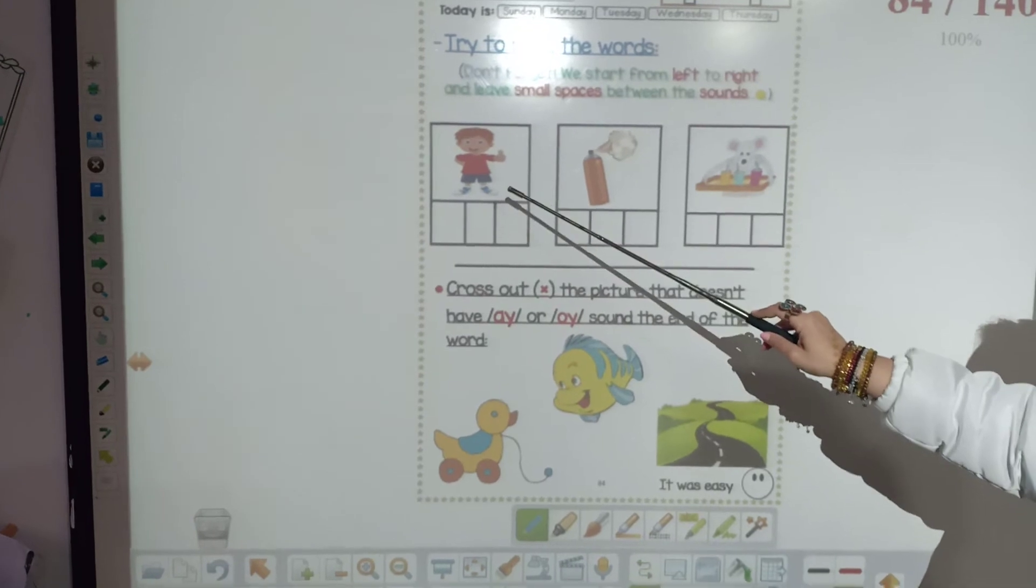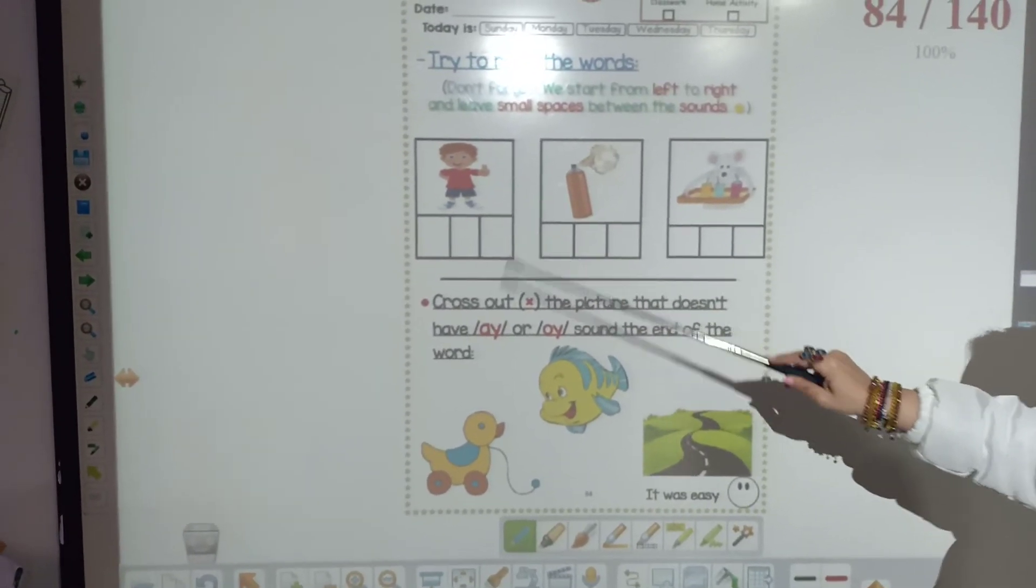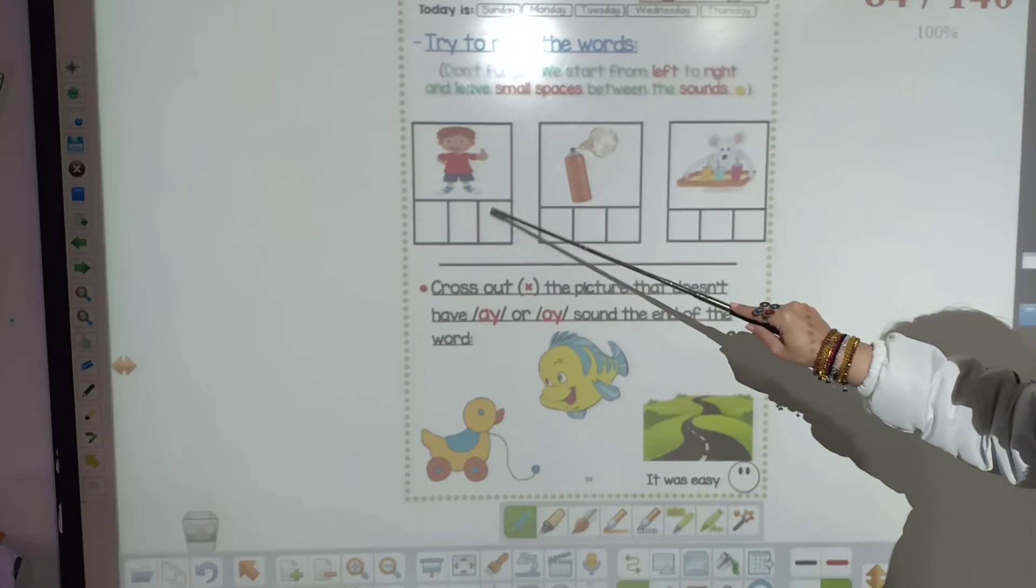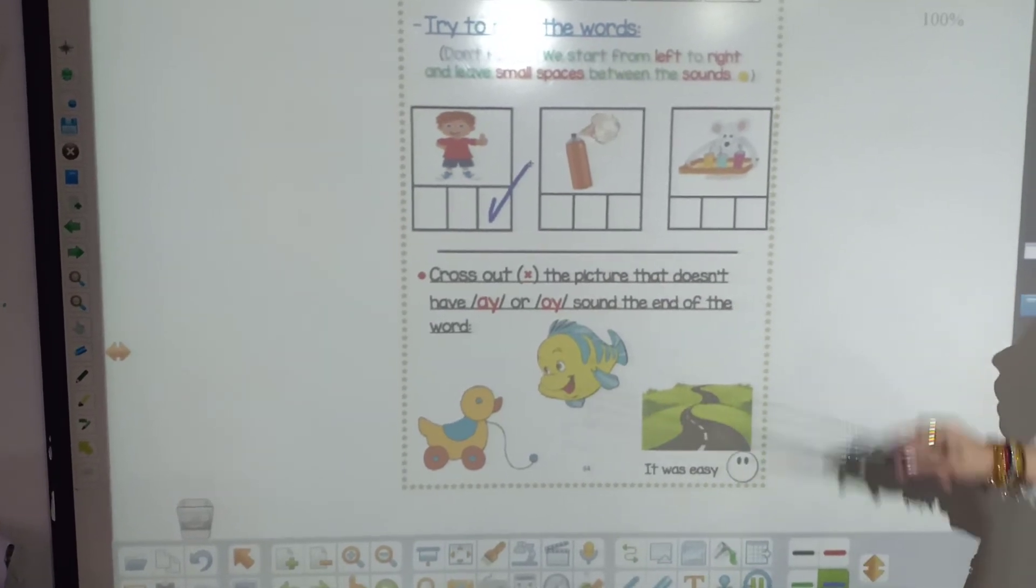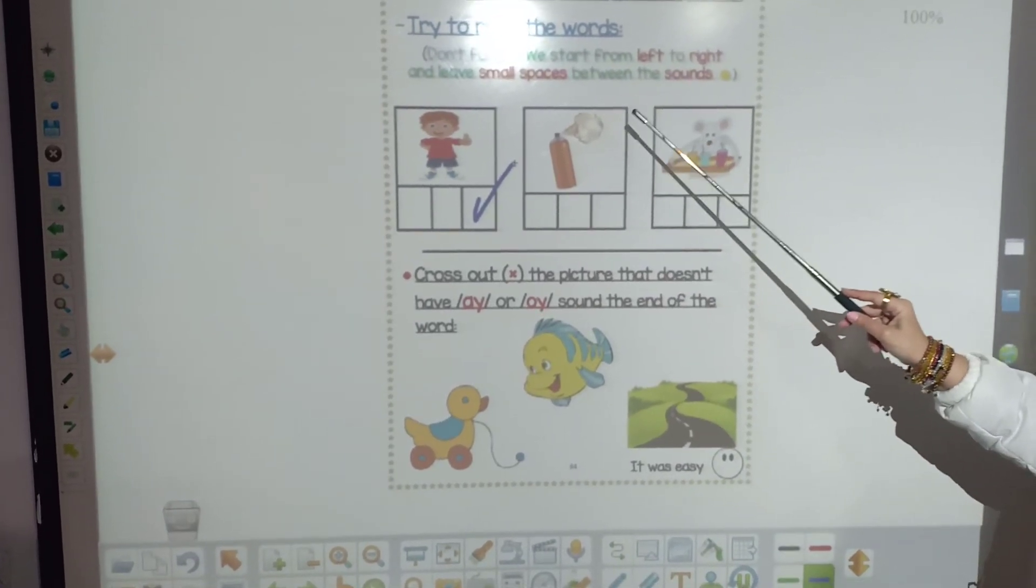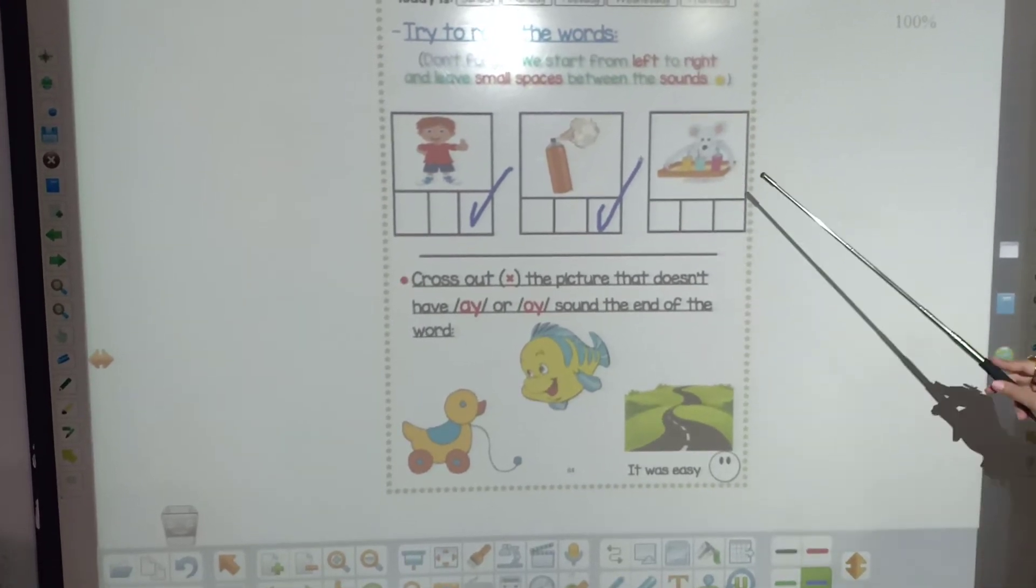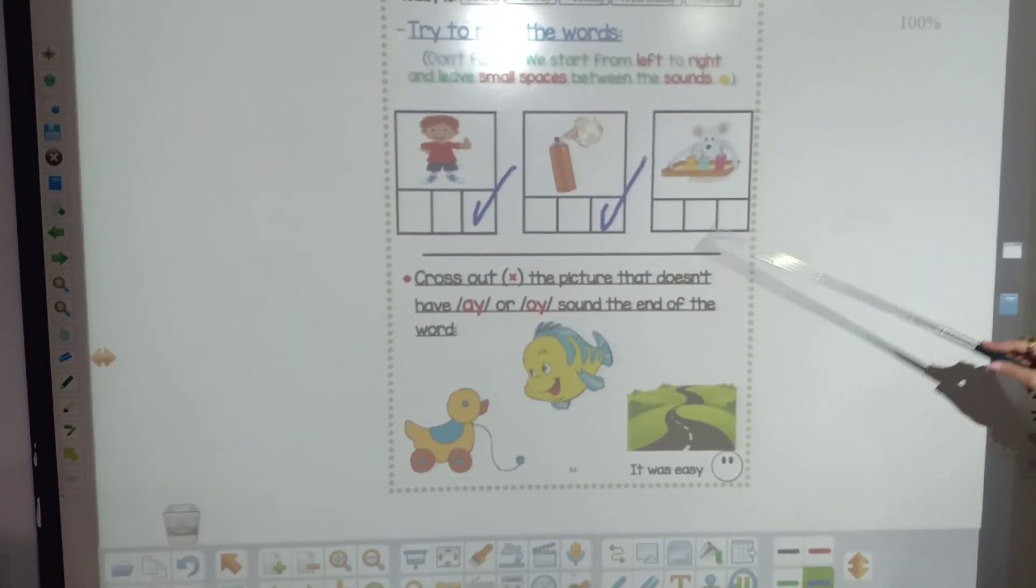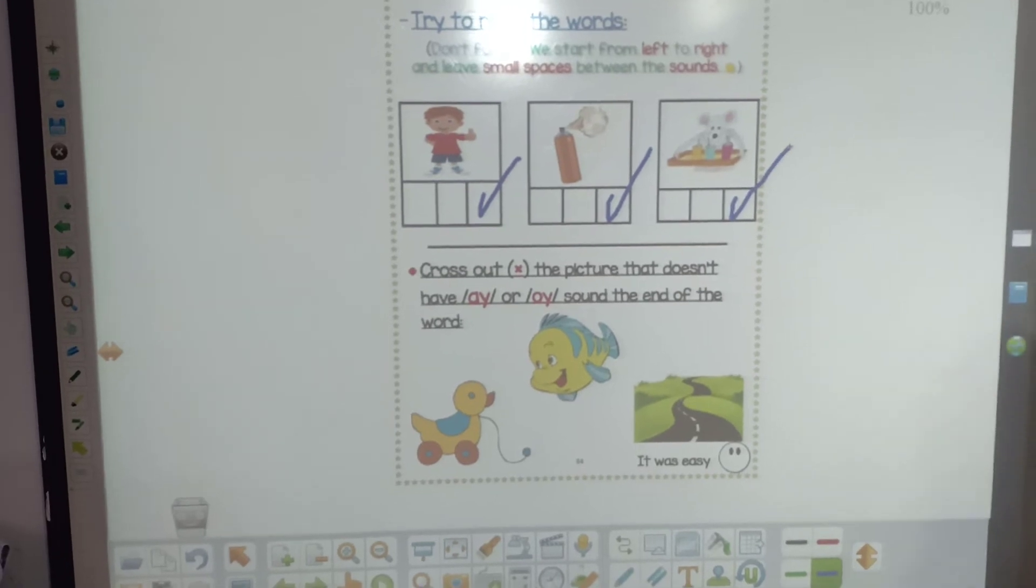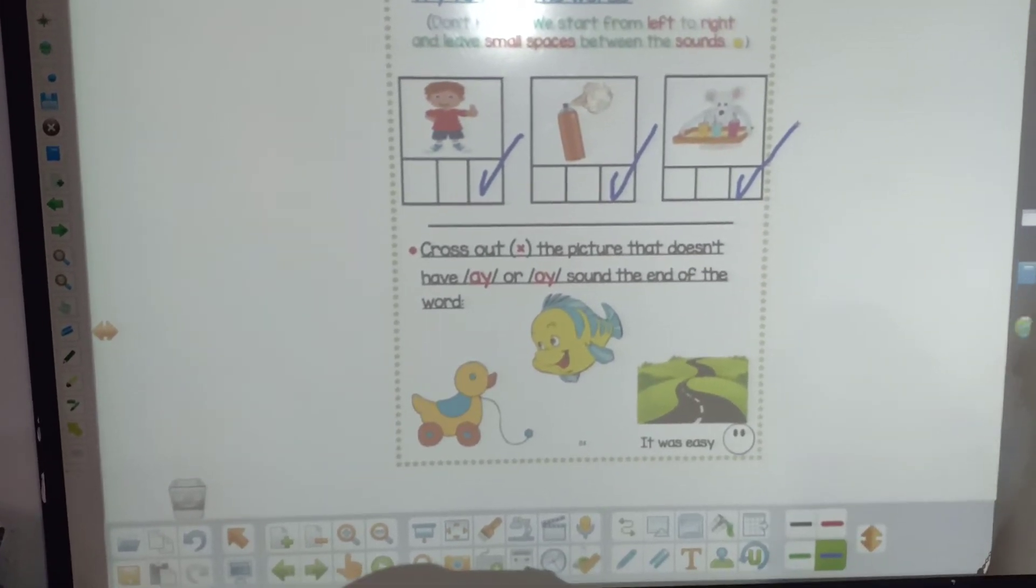This picture is boy. B, oy. Where can you hear the sound oy? At the end. Spray. S, P, R, ay, at the end. Tray. T, R, ay. So, tray has ay at the end.